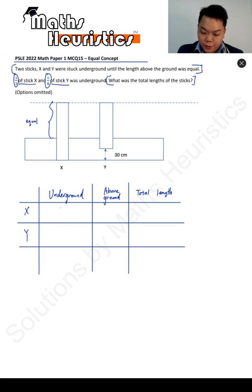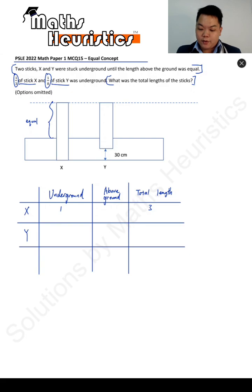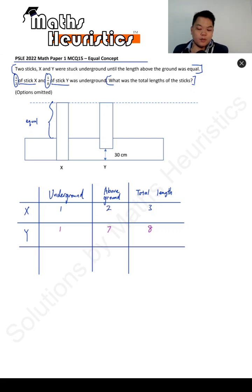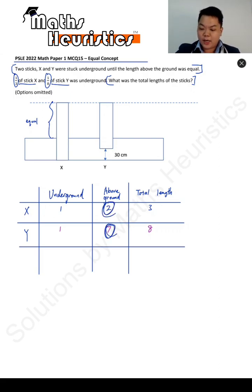The underground portion for X was one out of a total of three, whereas for Y it was one out of a total of eight. So the above-ground portion for X will be two, and the above-ground portion for Y will be seven. So these are two units for X and seven parts for Y.